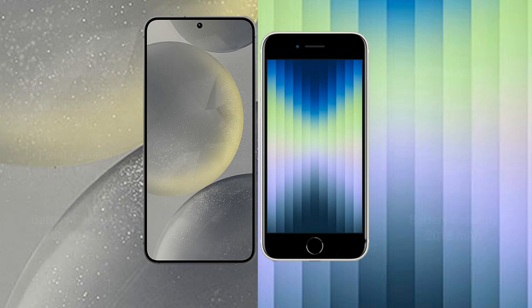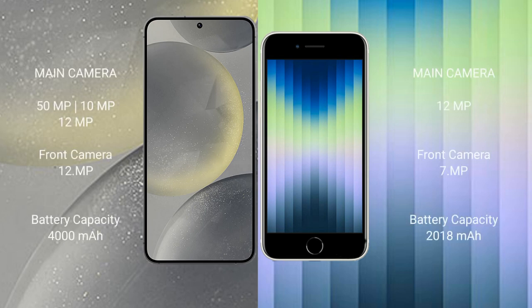The Samsung Galaxy S24 features a triple rear camera setup: 50MP plus 10MP plus 12MP, with a 12MP front camera. The iPhone SE features a single 12MP rear camera and a 7MP front camera.